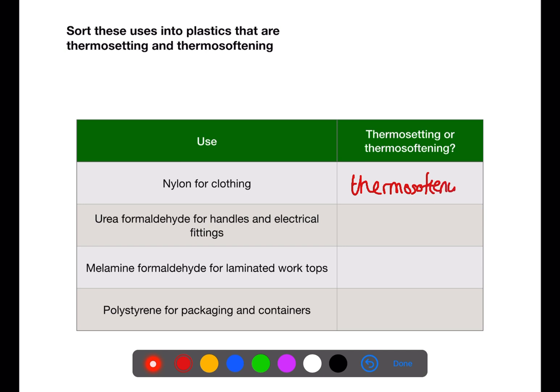Urea formaldehyde is used for handles and electrical fittings. Both of these need to maintain their shape and therefore are thermosetting.